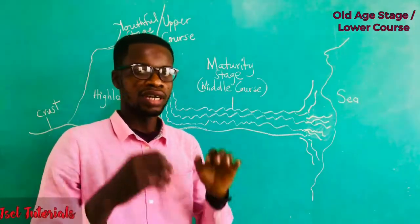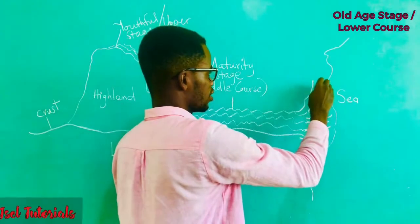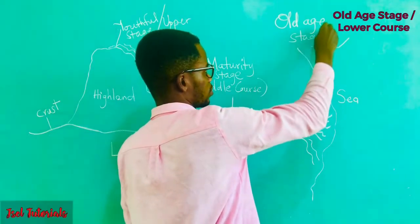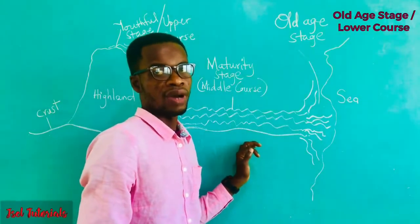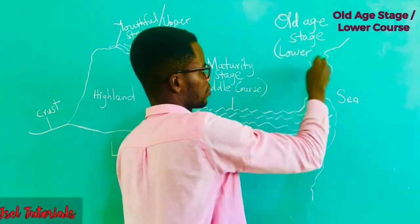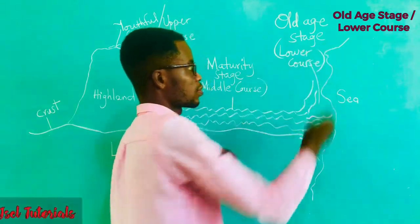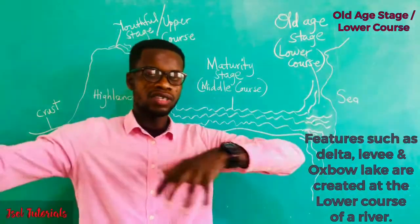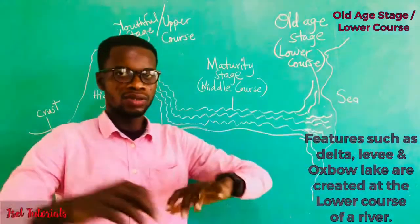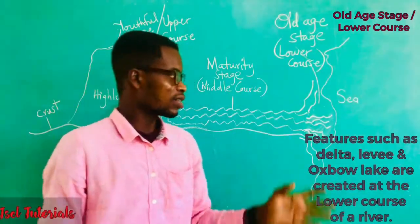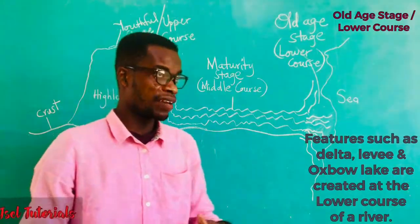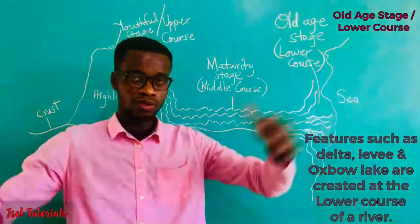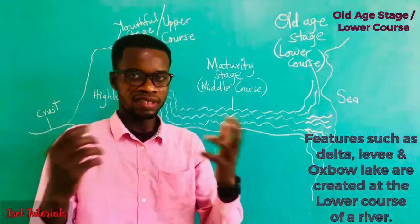That slow flow of the river leads to the old age stage, and that course is referred to as the lower course of the river. At this stage, features like the delta can form — the delta wetlands spread out because the streams are now separating; the river is separating itself and you can have wetlands forming at different places. We can also have what we call the levee, where there is a block that obstructs or hinders the movement of the river, causing it to flow somewhere we don't want it to go.